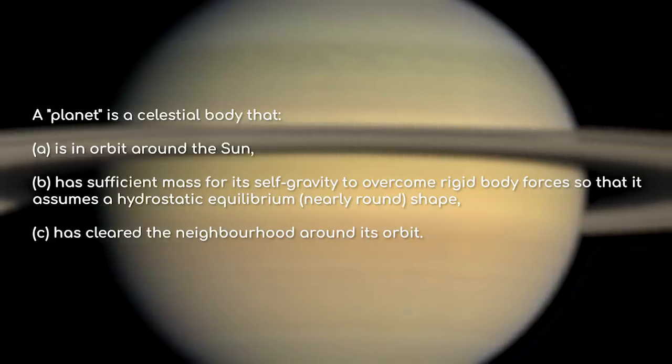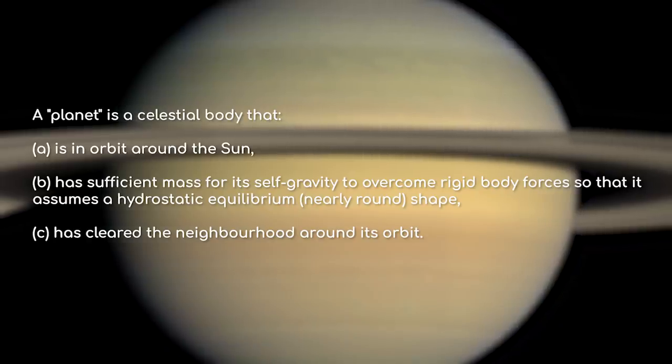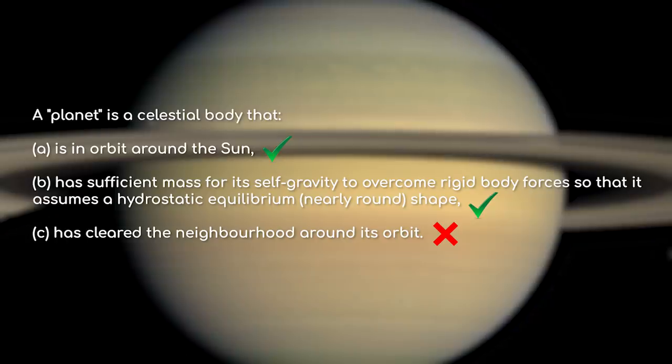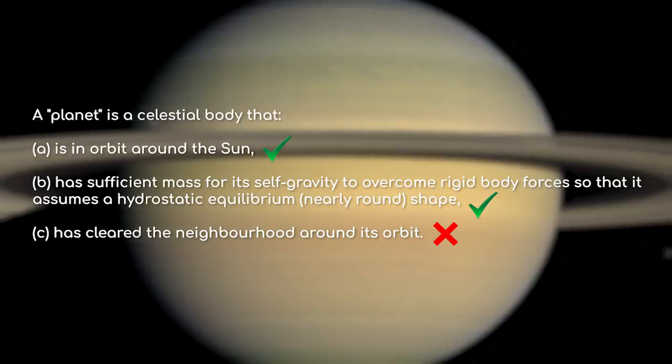or which means it has a nearly round shape, and has cleared the neighbourhood around its orbit. So although Pluto fits the bill for the first two categories, because it lies in the Kuiper belt, it has not cleared its orbit, and thus is not a planet.